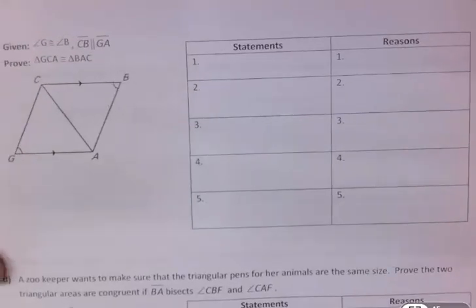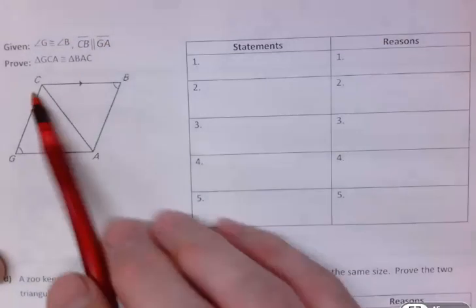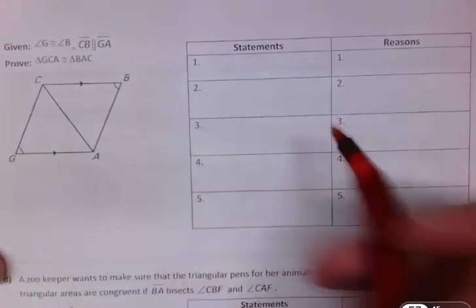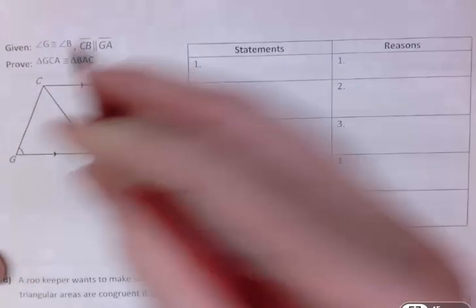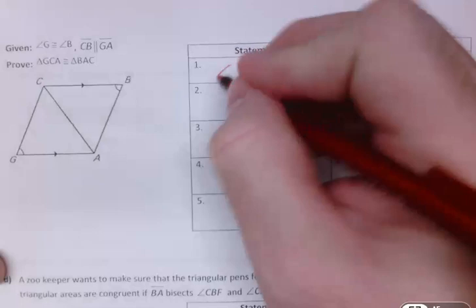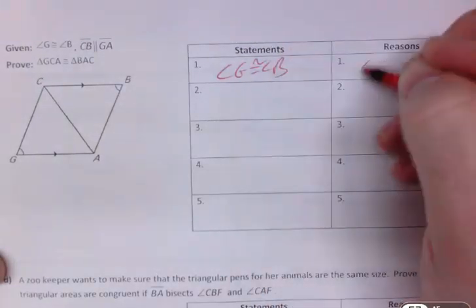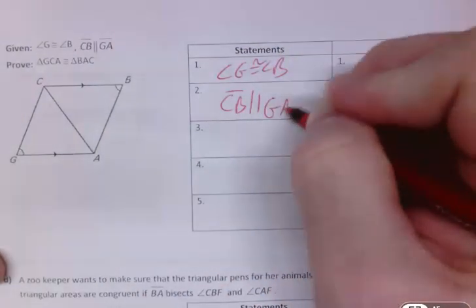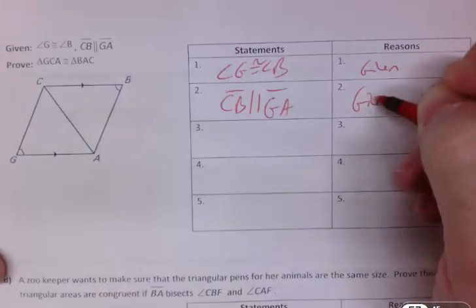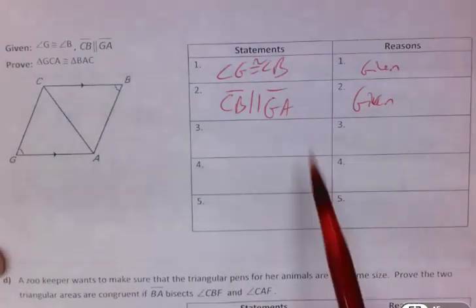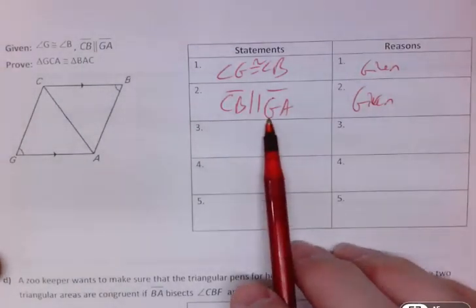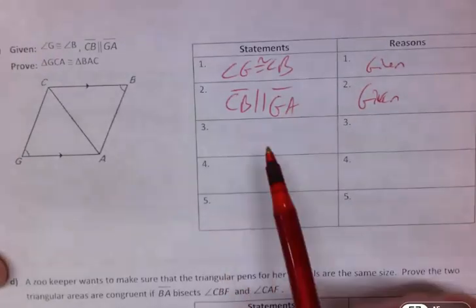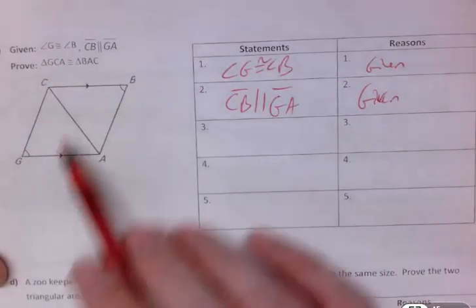How about this one? This time they did mark it. CB is parallel to AG. So let's fill that in. I should have done this one first. Angle G is congruent to angle B, that's given. CB is parallel to GA, that's given. If you put those on the same line, that's totally fine. To be honest, I don't remember if I put them on the same line when I did it the first time. Doesn't make a difference. If we need another box, we'll add another box. So that's all marked and all given.